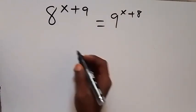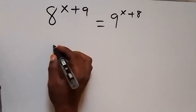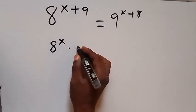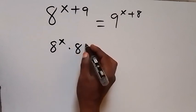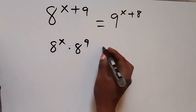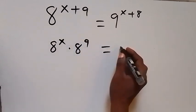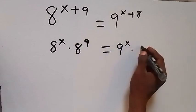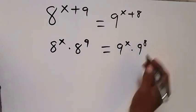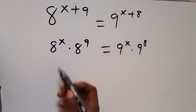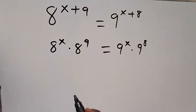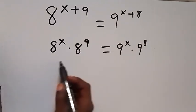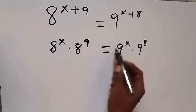From here we can rewrite this as 8 raised to power x multiplied by 8 raised to power 9. Then also on this side we have 9 raised to power x multiplied by 9 raised to power 8. This is from the law of indices, and here let's divide both sides by 9 raised to power x.